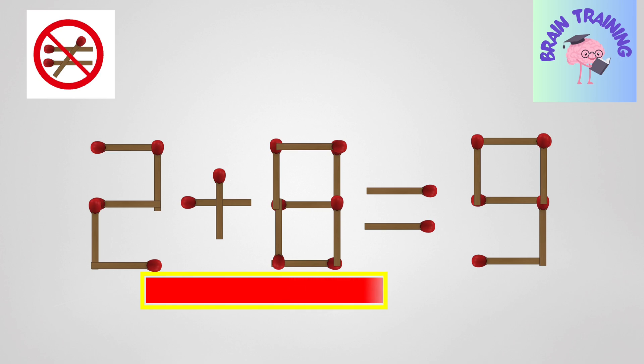Time's up. Now for the answer. To correct the equation, remove the match from the number 8 to change it to 6 and place it in the number 9 to change it to 8. This gives you 2 plus 6 equals 8. Perfect.